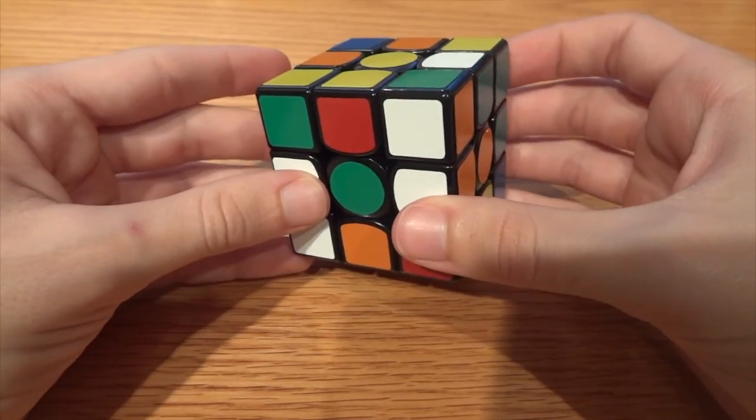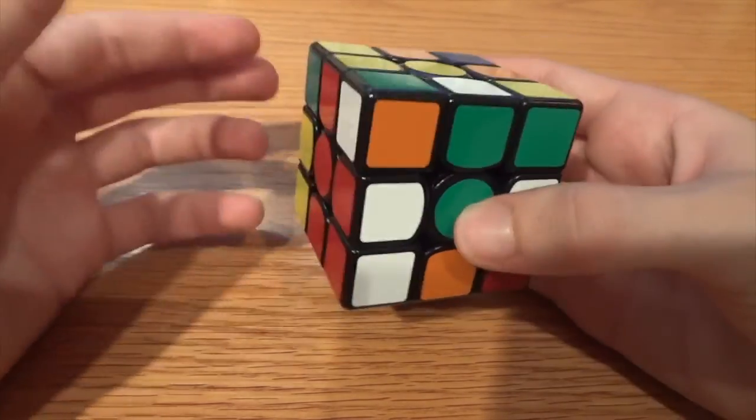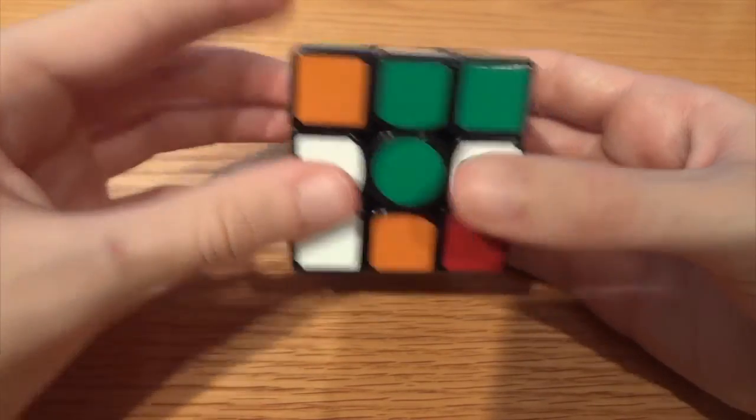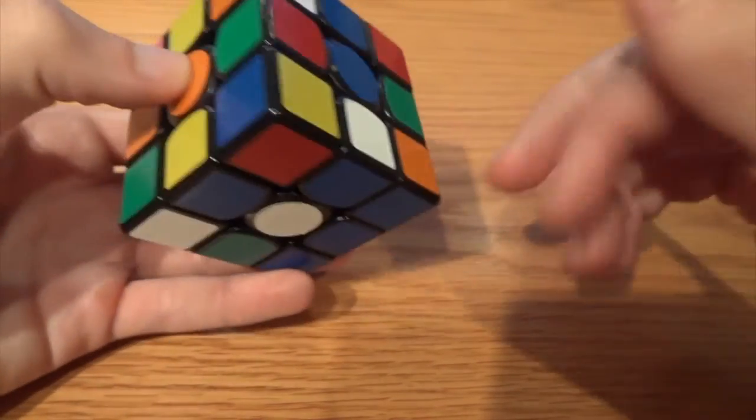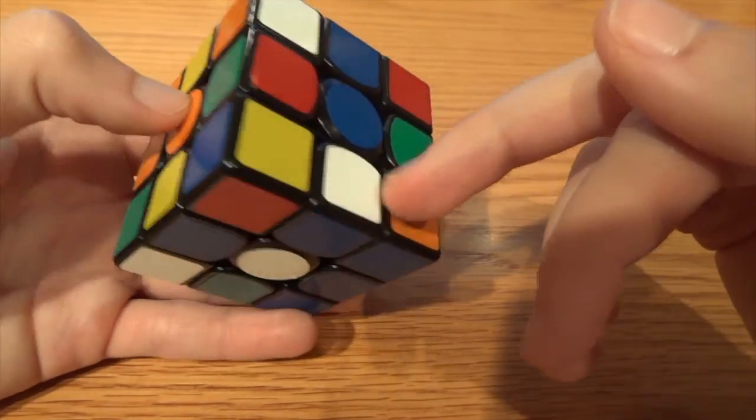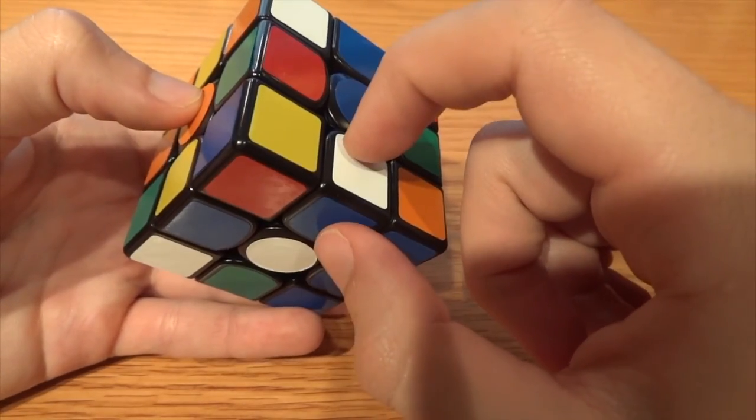So I'm going to go ahead and set my green piece. Now I notice that this is in sort of a weird spot, my blue edge. It's in the correct space but it's flipped, and that's the hardest place for it to be.